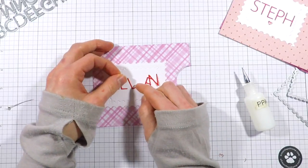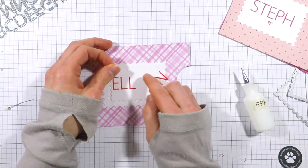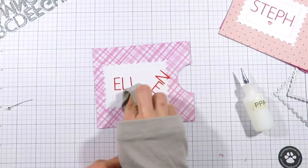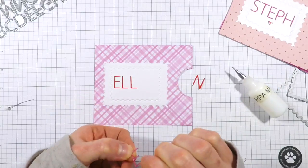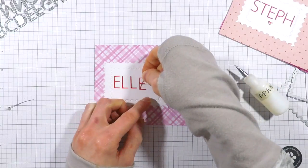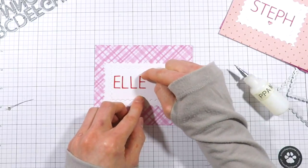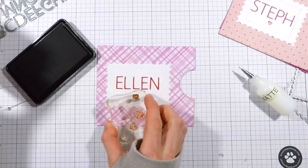I'm going to spell her name out on this envelope using the Urban Uppercase letters. I'm just laying these down onto the envelope and I've applied them using some PPA matte adhesive. You can use any type of liquid glue you prefer. I just really like the PPA matte because it dries nice and clear, very similar to multi-medium by Ranger.